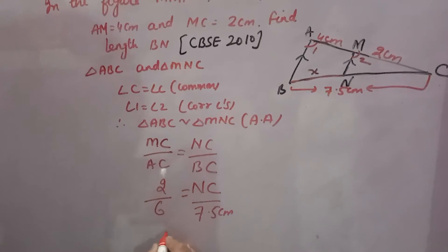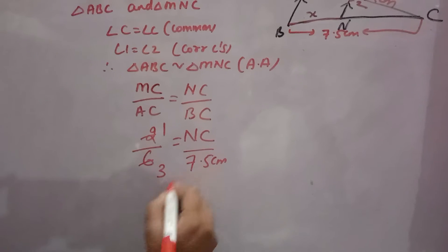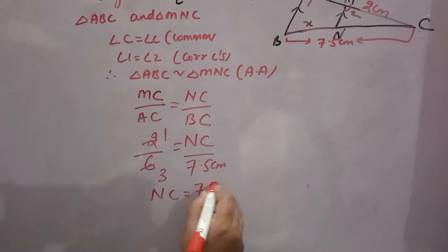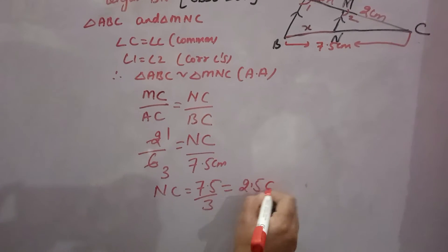You can solve it. You will get 2 times 1 is 2, 2 times 3 is 6. So NC will be 7.5 over 3, that is 2.5 cm.